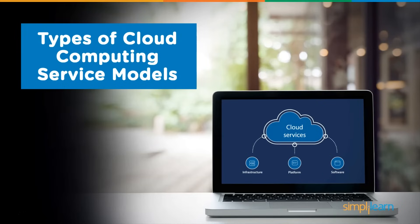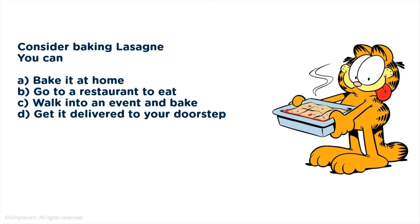Now let's look at the types of cloud computing service models. For a better understanding, let's consider a scenario: baking lasagna. You have four options — you can bake it at home, go to a restaurant to eat lasagna, walk into an event and bake it there, or get it delivered to your doorstep.